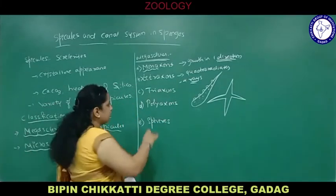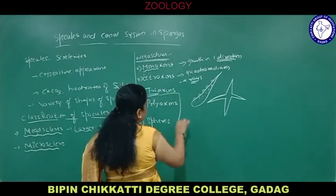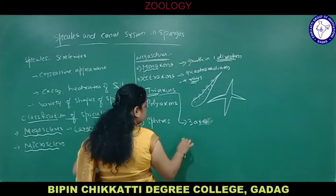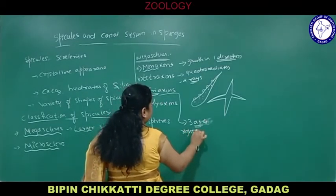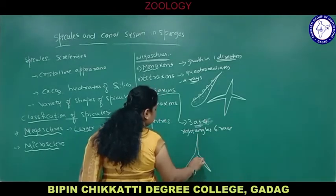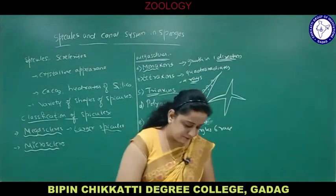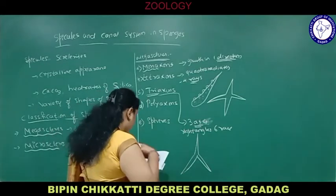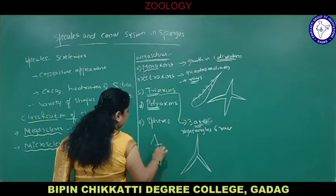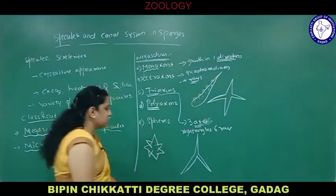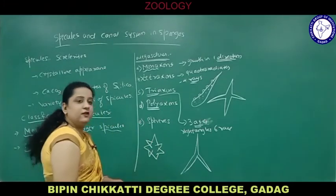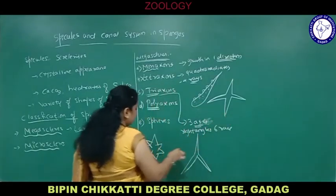Third is triaxons. Tri means three — they consist of three axes at right angles, producing six rays. Fourth is polyaxons — poly means many, so many number of rays or axes arise from a central point in different planes. These are the four types: monaxons, tetraaxons, triaxons, and polyaxons.